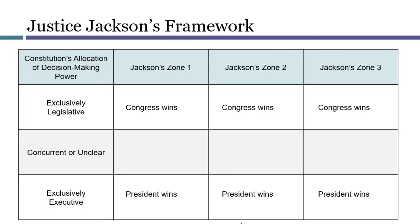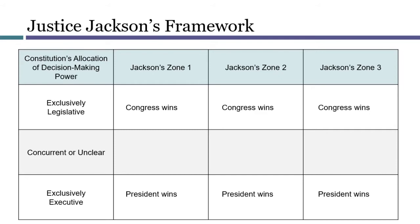Justice Jackson's influential idea from his Youngstown Concurrence is to divide this middle area into three separate zones. Judicial decision-making in each zone can emphasize slightly different considerations. Before looking at the zones, it's worth noting what stays the same — namely the top and bottom rows. If a case involves powers that are exclusively legislative or exclusively executive, it's easy to tell who should win. Outside of these areas of exclusive power, Justice Jackson proposes three zones, defined by the interaction of two factors: what Congress has legislated and what the President has done.